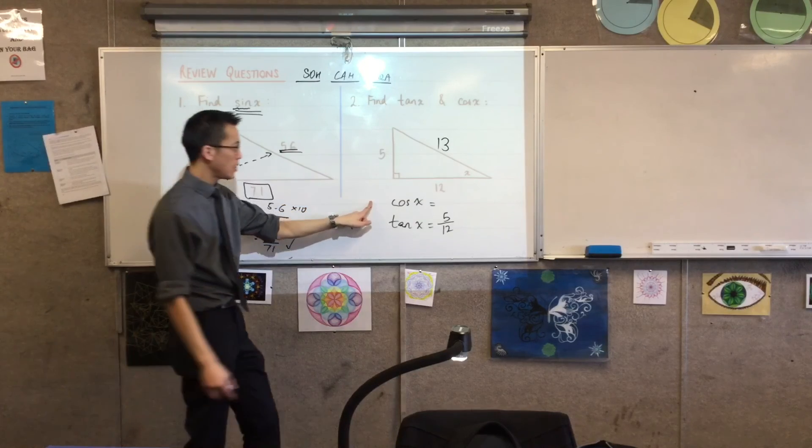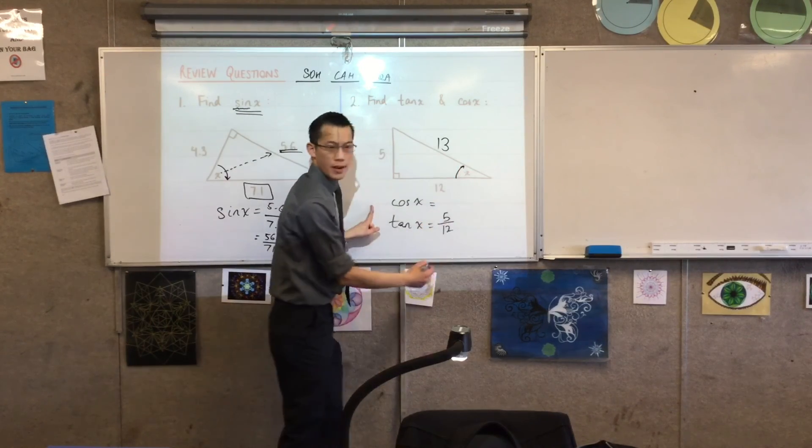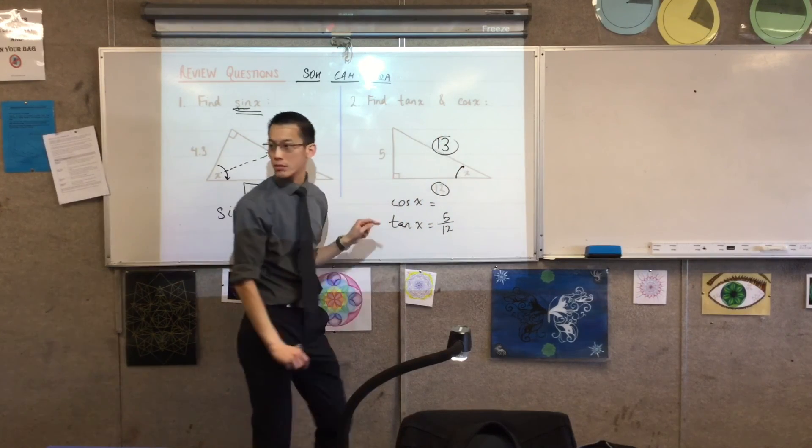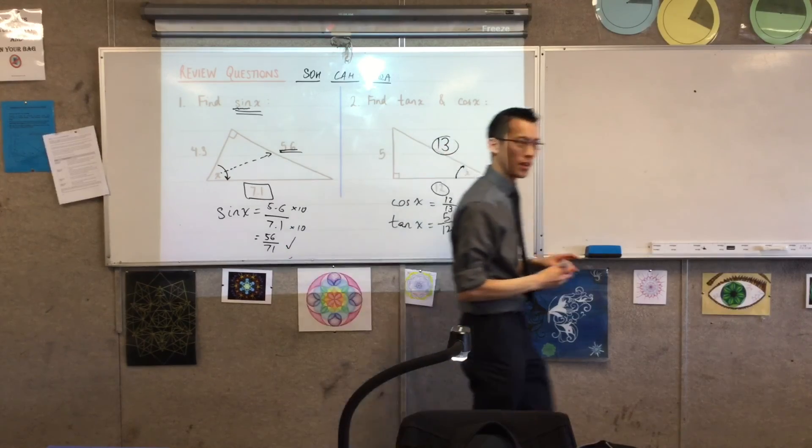Cos(x) is going to be, which pair of sides am I looking at? Adjacent on hypotenuse. 12 on 13, thank you very much. Full stop.